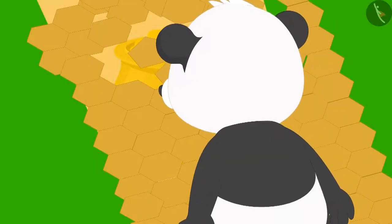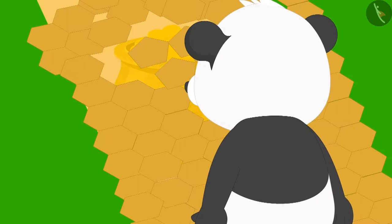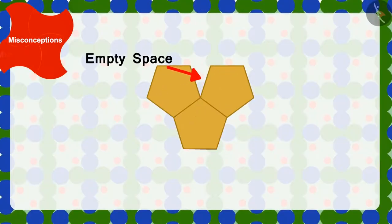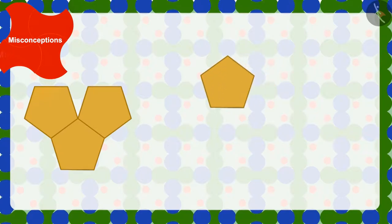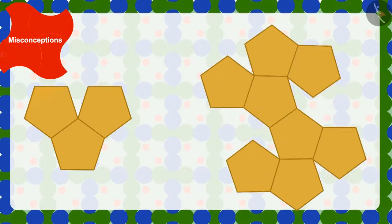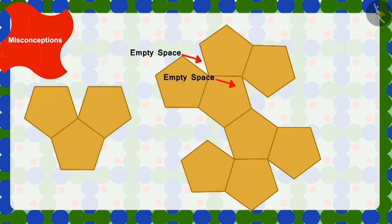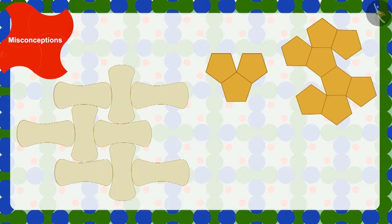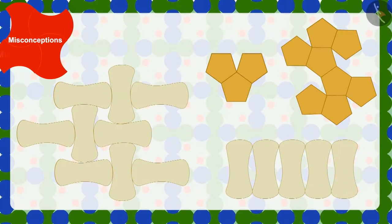Golu's tiles were of this shape. Golu is thinking how he can make a design with them so that no space remains between two tiles. Children, can you think of any such design? That's right — we cannot make any such design using this shape so that no space remains between two tiles. Remember, children, there are many shapes like this one which cannot be used to make designs that have no space between them.